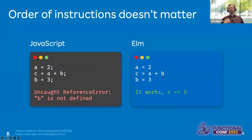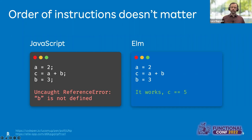This is probably what I personally like the most about functional programming — the order of instructions doesn't matter. With an imperative language, if you use a variable that is not defined, like B in the second row that is only defined in the third row, you get an error. The exact same code written in a functional language just works, regardless of the order of instructions. This has several nice consequences: for example, you can move your code around without problems, which is very useful during refactoring.